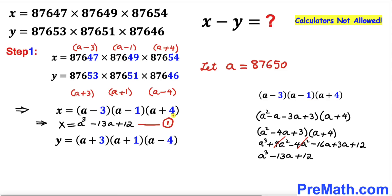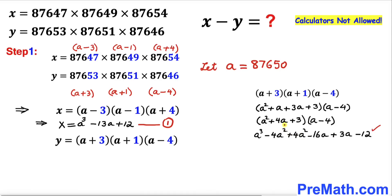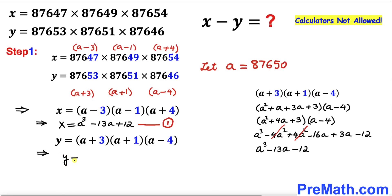Now let's expand y = (a + 3)(a + 1)(a − 4). Multiplying these factors, the −4a² and +4a² terms cancel, and combining the like terms gives −13a. So y simplifies to a³ − 13a − 12. Let's call this equation two.